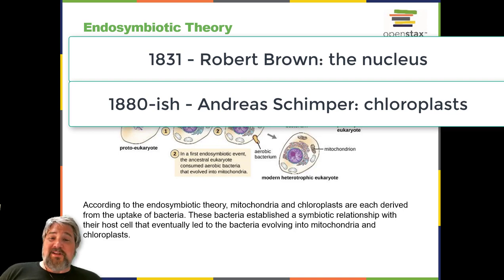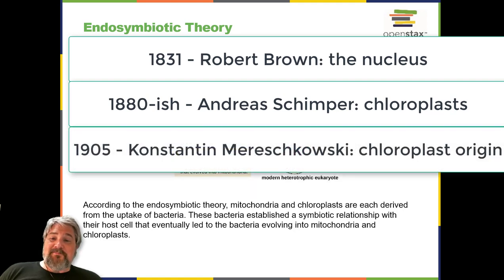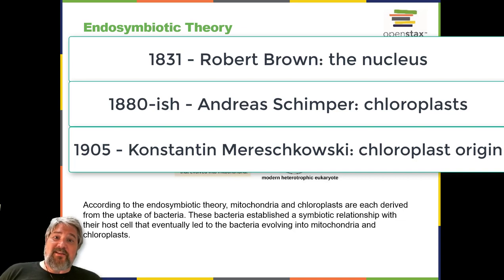Based upon the chloroplasts' ability to reproduce independently, Russian botanist Konstantin Mereschkowsky (1855–1921) suggested in 1905 that chloroplasts may have originated from ancestral photosynthetic bacteria living symbiotically inside a eukaryotic cell. He proposed a similar origin for the nucleus of plant cells. This was the first articulation of the endosymbiotic hypothesis and would explain how eukaryotic cells evolved from ancestral bacteria.